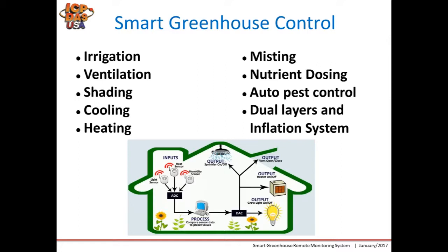For shading, a thermal step can control the shade curtain automatically to shade plants. The thermal step will control temperature and shading — it can control the air conditioning system when it's too hot and control the heating system when it's too cold.